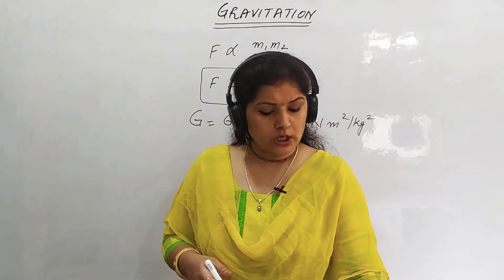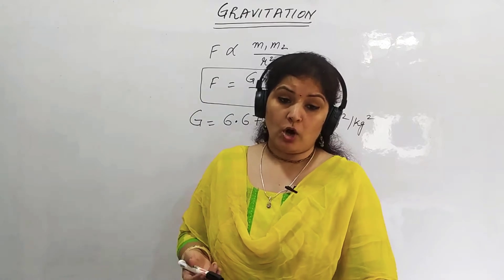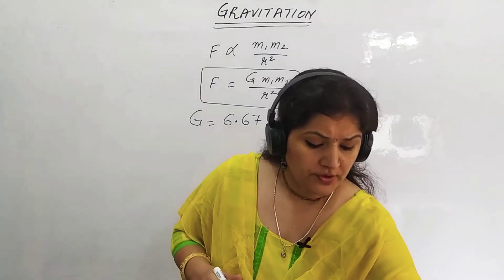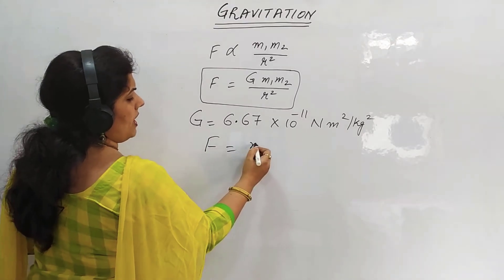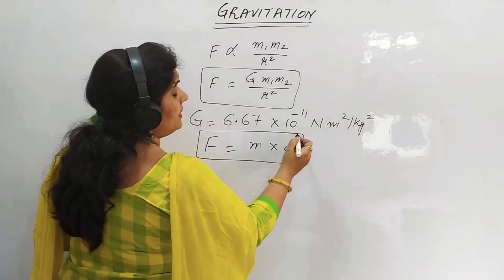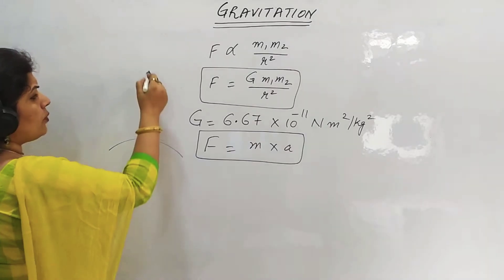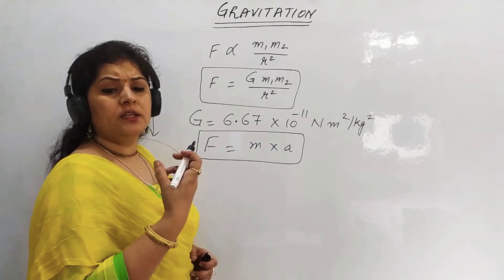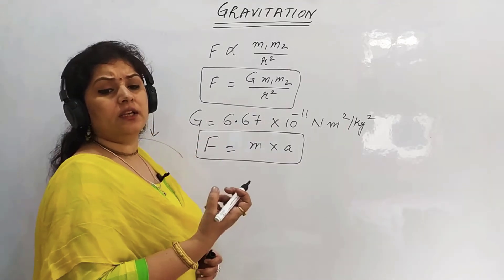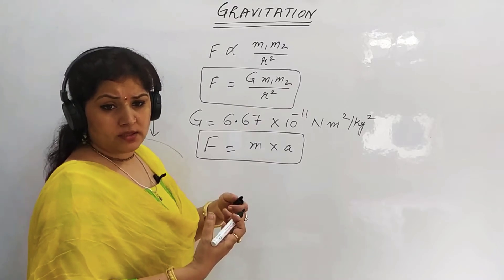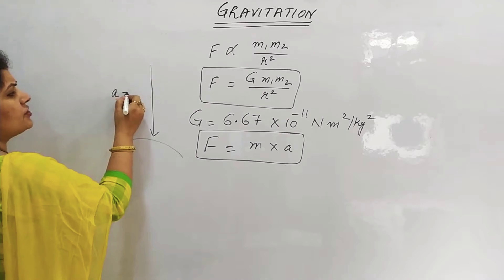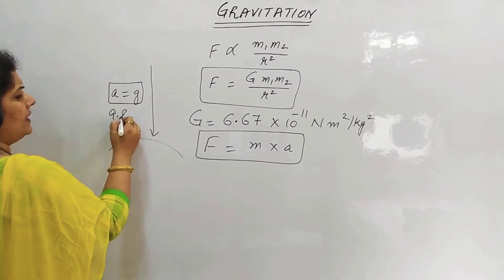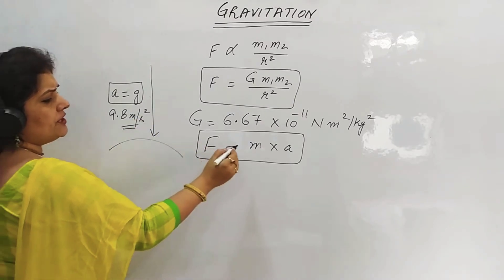We will also learn about the concept of weight. In the previous chapter on motion, we learned that weight is given by mass times acceleration, i.e., F = ma. In the case of Earth, any body falls towards the Earth — the Earth attracts every body towards itself — and the acceleration with which any body falls towards the Earth is 9.8 m/s².